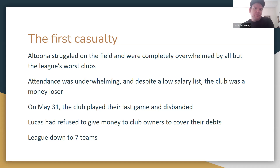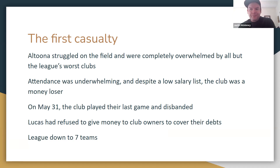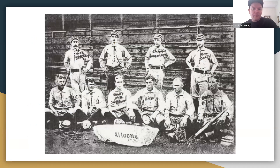Altoona became the league's first casualty. They struggled on the field, were overwhelmed by even the league's worst clubs, and drew underwhelming attendance. Despite a low salary list they were a money-loser, and on May 30th — just six weeks into the season — they played their last game and disbanded with a record of 6 and 17. Lucas refused the chance to bail out the club, apparently believing Altoona was making the league look bad in the press, and wanted a fresh start.